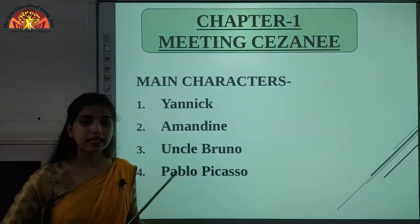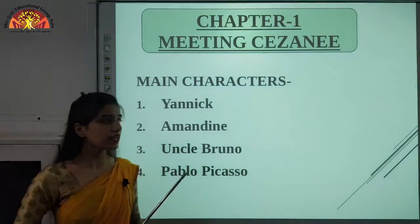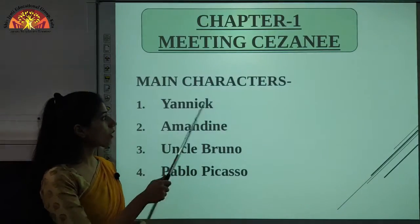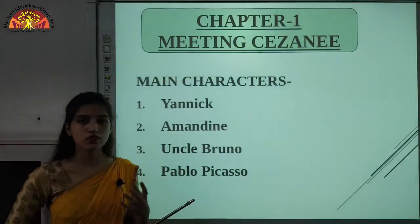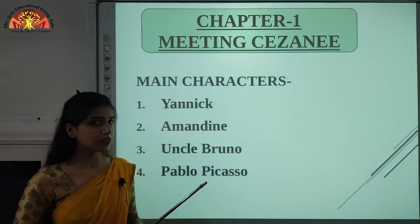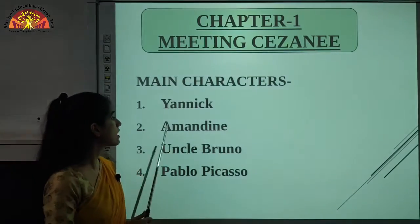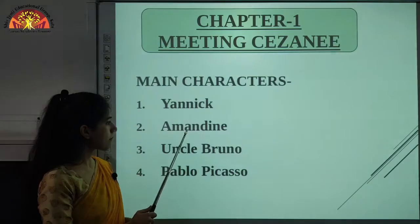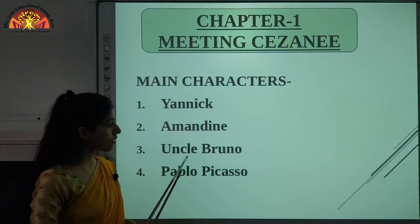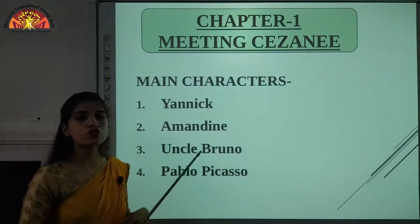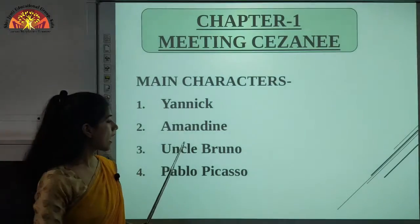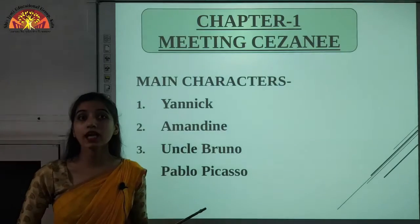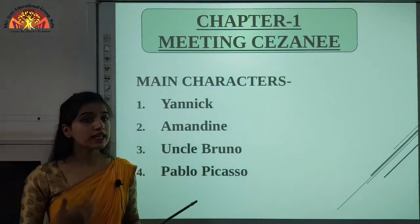Let's see the main characters of the story. Yannick, about whom the story is — he is the main protagonist. Second is Amandine, who is Uncle Bruno's daughter. Third is Uncle Bruno, and the fourth one is Pablo Picasso.